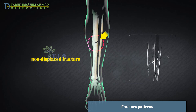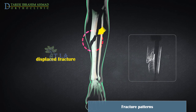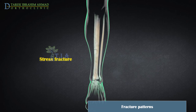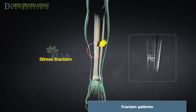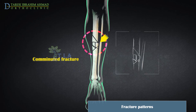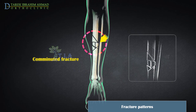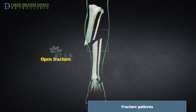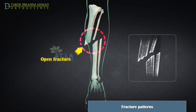A stable fracture involves a crack in the bone that leaves most of the bone intact and in its normal position — this is called a non-displaced fracture. With a displaced fracture, a crack in the bone moves part of the bone so that it is no longer in line. Stress fractures, also called hairline fractures, are common overuse injuries — these are small, thin cracks in the bone. When the bone fractures into three or more pieces, this is called a comminuted fracture. Open fractures are fractures where the bone breaks through the skin and can be seen, or a deep wound exposes the bone through the skin.